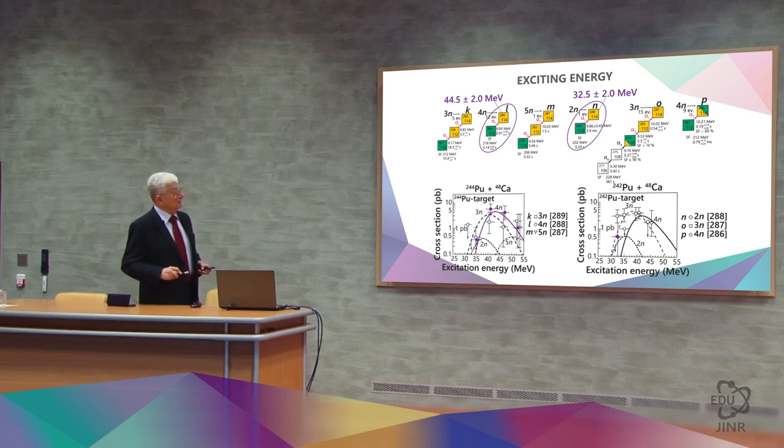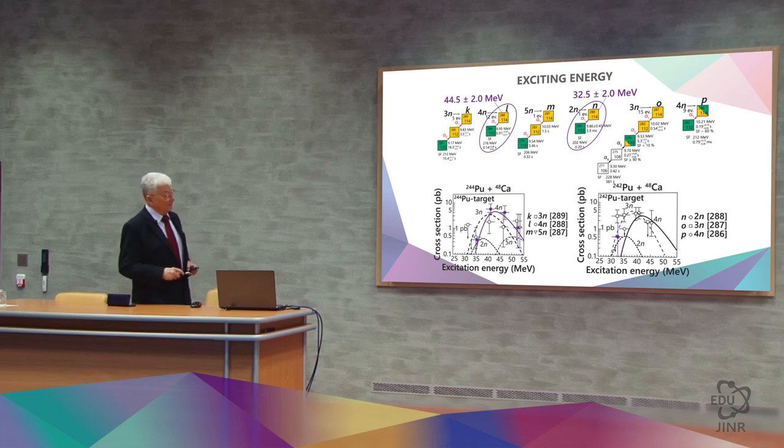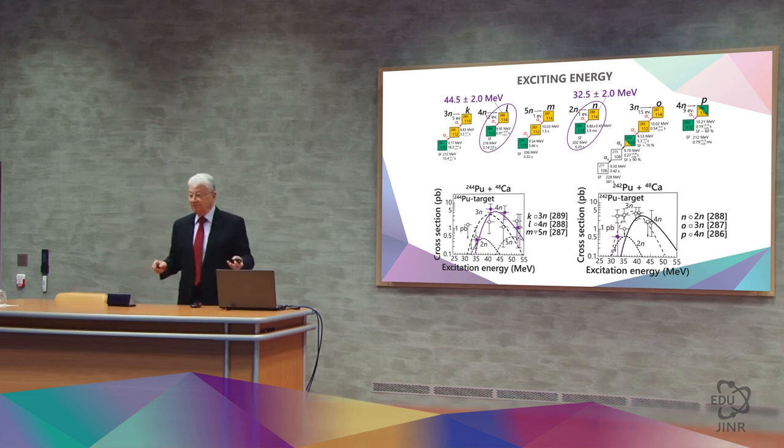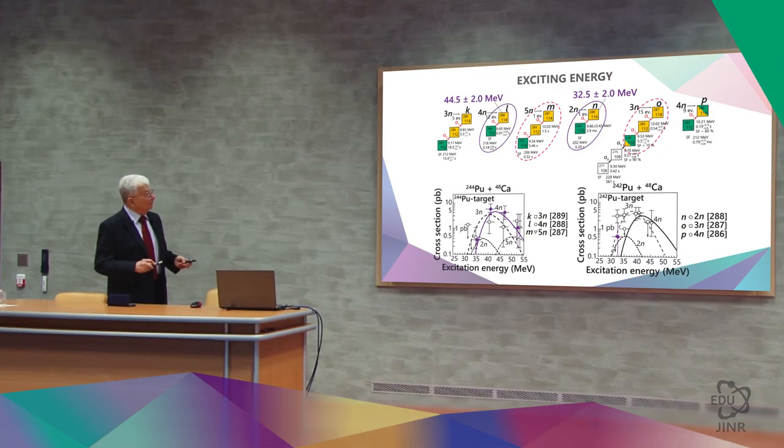If we remember that it was plutonium-244, and this was plutonium-242, then they are distinguished by two neutrons. And here is the difference in the energies that we have, 44.5 to 32.5, which is exactly the amount of energy that is emitted by two extra neutrons. That is, here we have an isotope as a 4N reaction, and here we have this isotope as a 2N reaction.